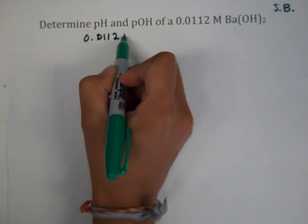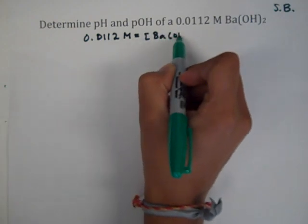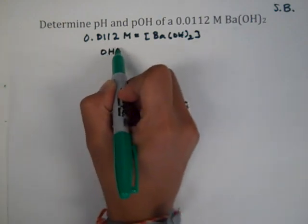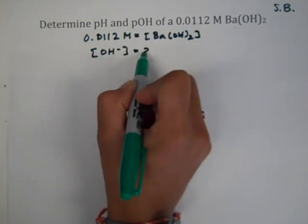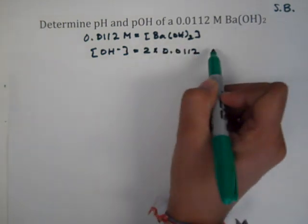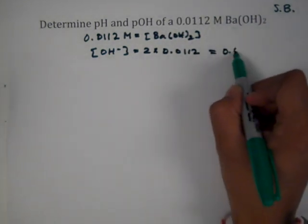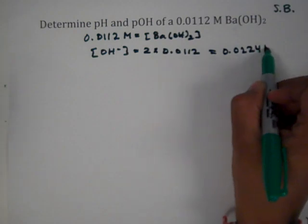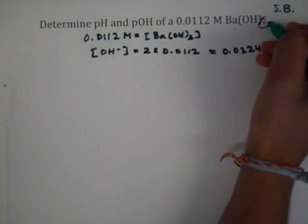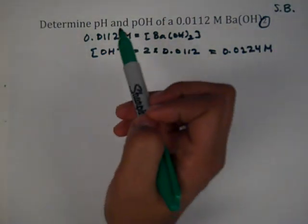Remember from our rules, 0.0112 molar will equal the concentration of barium hydroxide. But that means that the hydroxide concentration is going to be two times that number because we have two of them. So we're going to multiply our molarity by two, which gives us 0.0224 M. Don't forget that the alkaline earth strong bases have this two, and that two has to be accounted for in the OH concentration when we do our molarity.